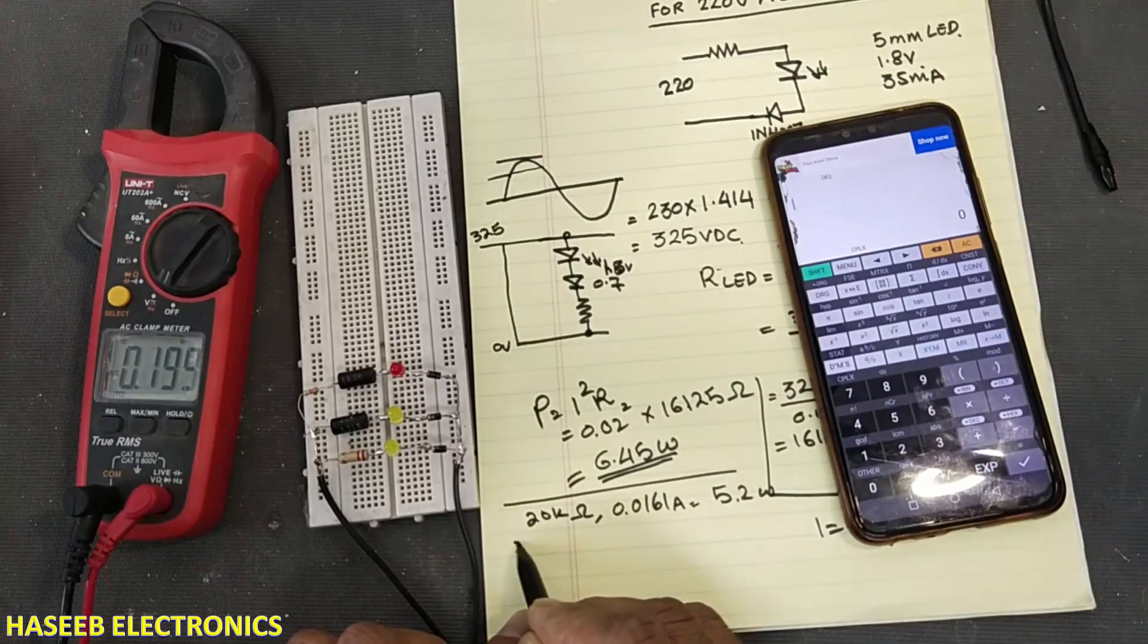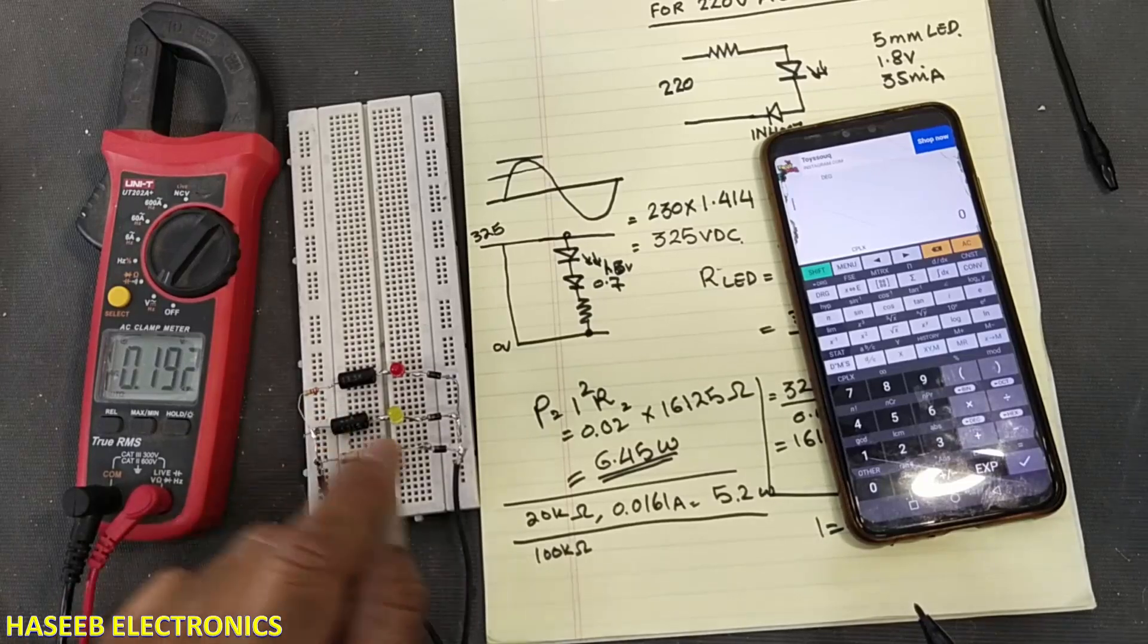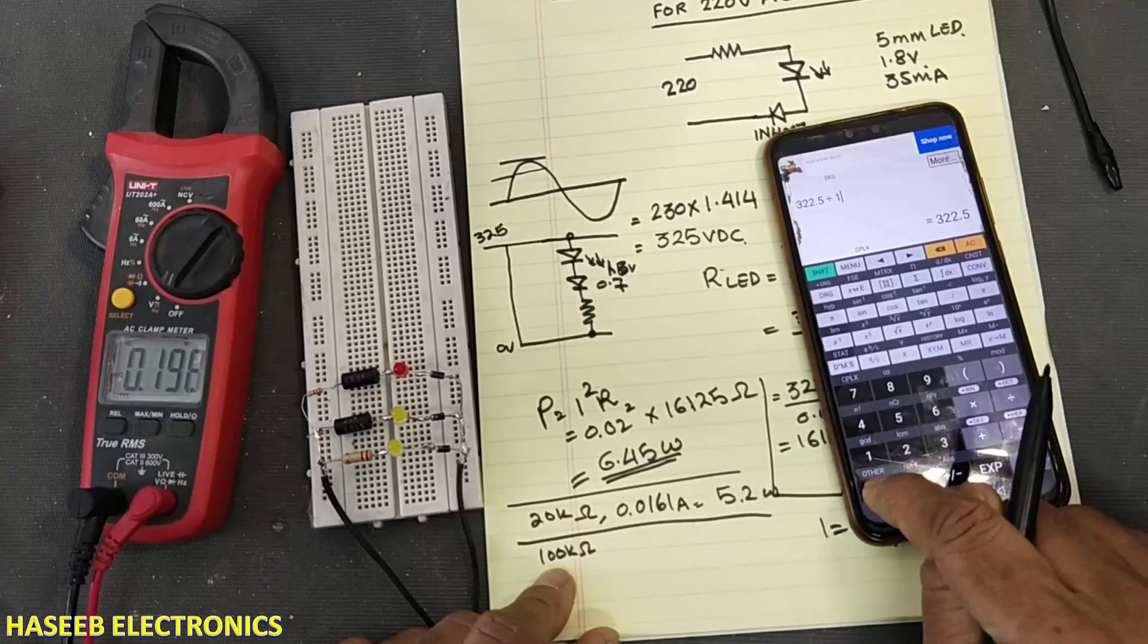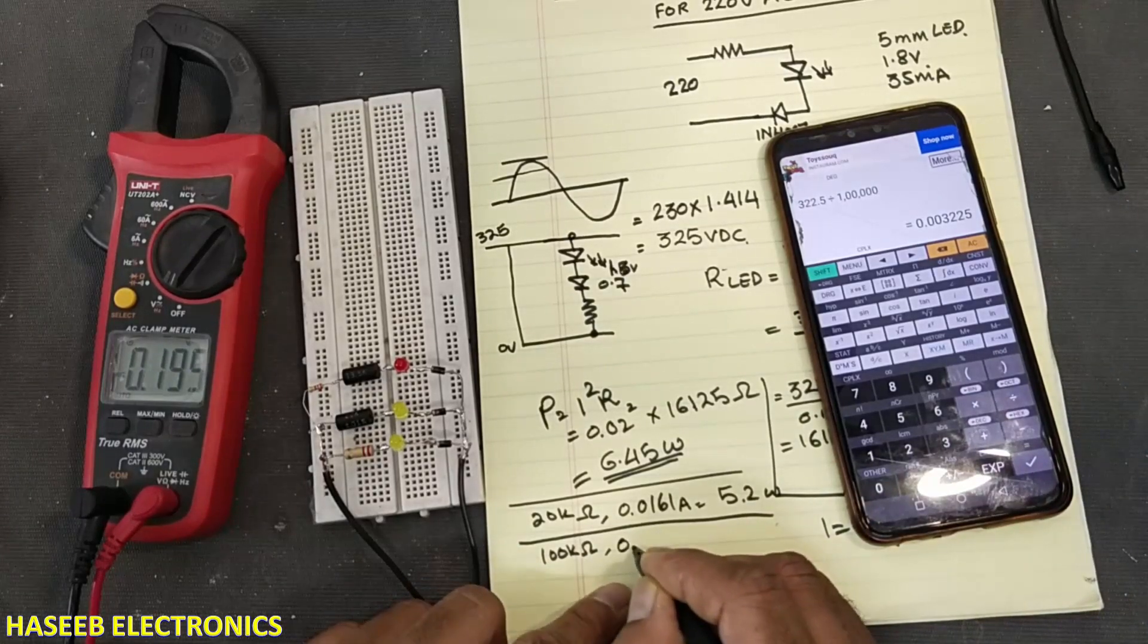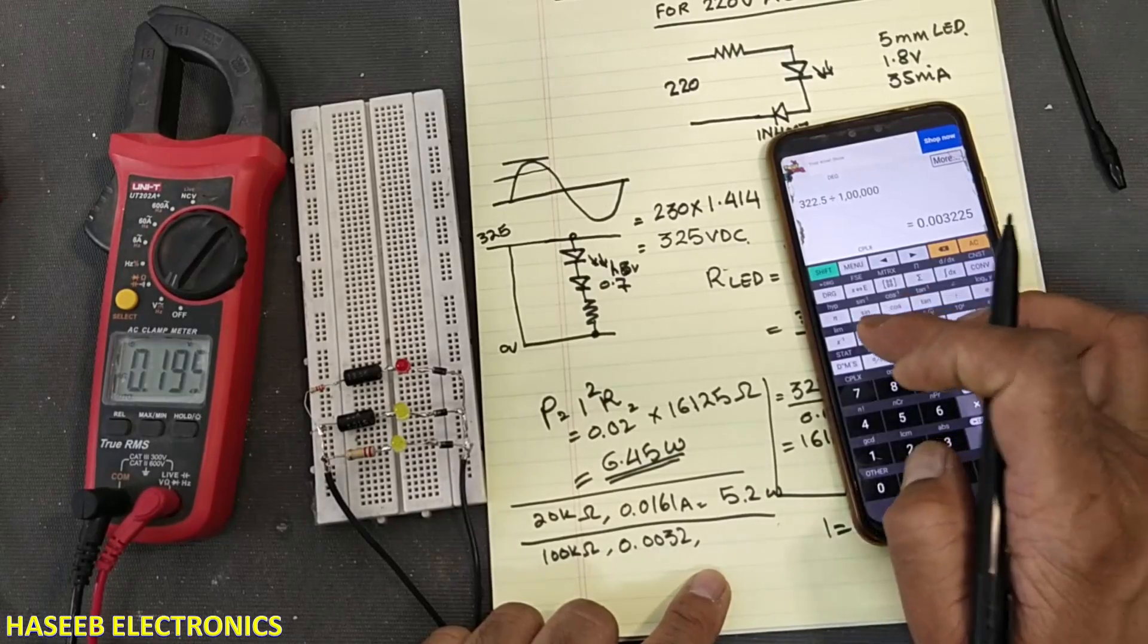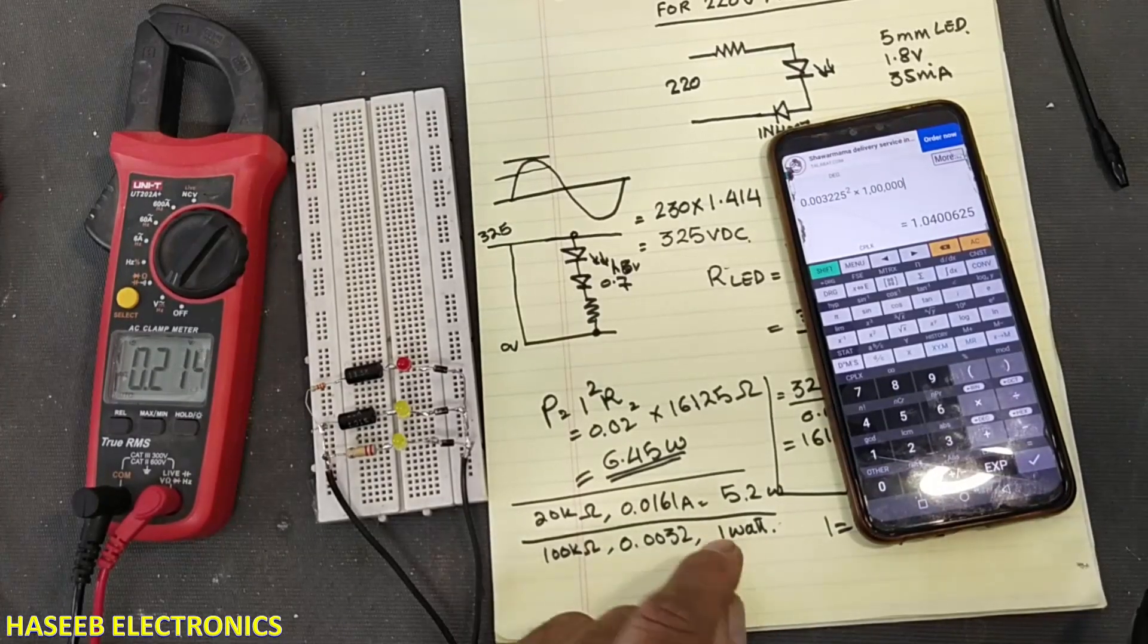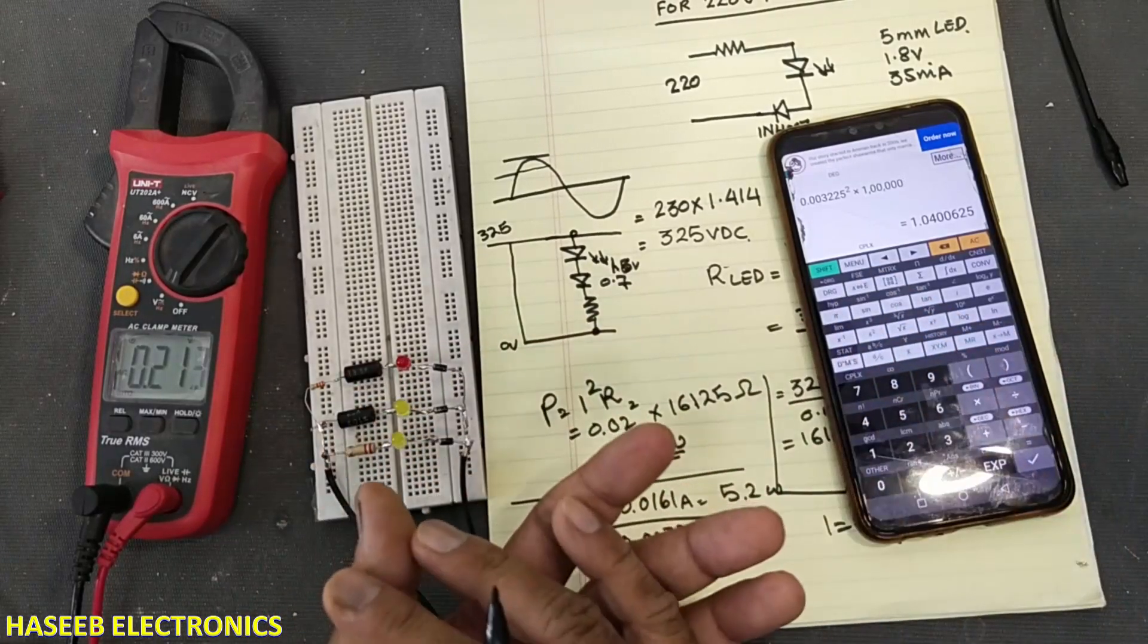We can also change resistor value to 100 kilo ohm. What will happen? The resistor value will increase, power rating will decrease and light of the LED will also decrease. If I use 100 kilo ohm, 322.5 volt divided with 100 kilo ohm. In that case, the current will be 0.00322, it is 3.2 milliampere. We will take it square and multiply it with 100 kilo ohm resistor. It is 1 watt. In this case, we will use 2 watt resistor. But 1 watt it will also create heat. If we are installing in the board, electric board, this 1 watt dissipation will generate heat in the confined area.